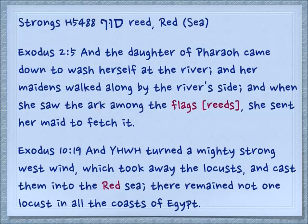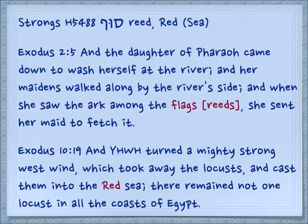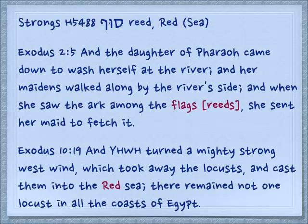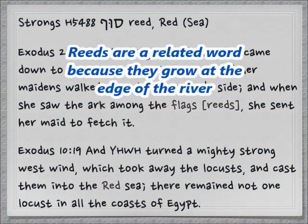This root also gives us a chance to talk about Yam Suf, which is traditionally translated as the Red Sea. But Suf doesn't mean red — it means reed. Exodus 2:5: 'The daughter of Pharaoh came down to wash herself at the river, and her maidens walking along by the river's side, when she saw the ark with Moses in it among the flags' — the flags are reeds — 'she sent her maid to fetch it.' So Suf actually means reed. The question is, why in Exodus 10:19 is it translated as red? 'And Yehovah turned a mighty strong west wind, which took away the locusts and cast them into the Red Sea. There remained not one locust in all the coasts of Egypt.'